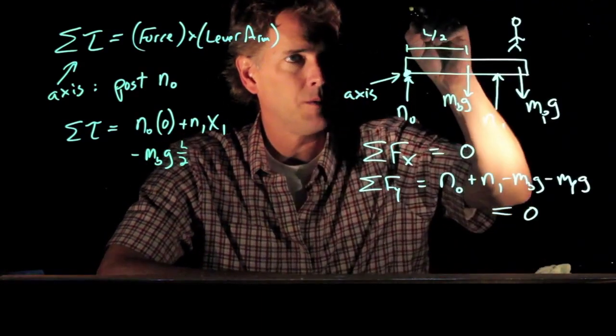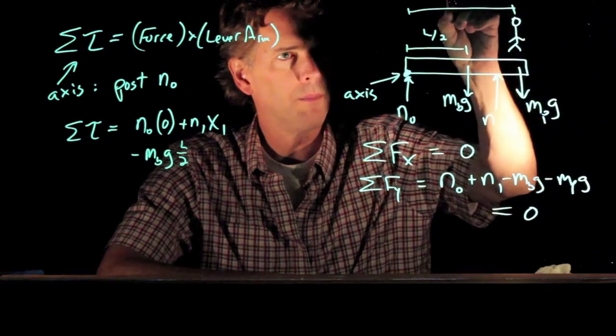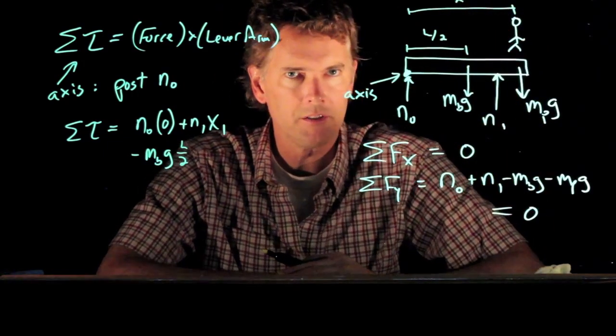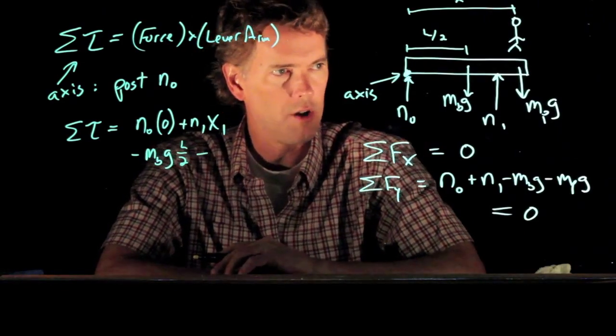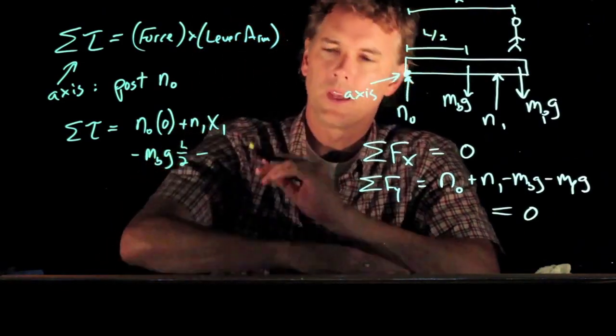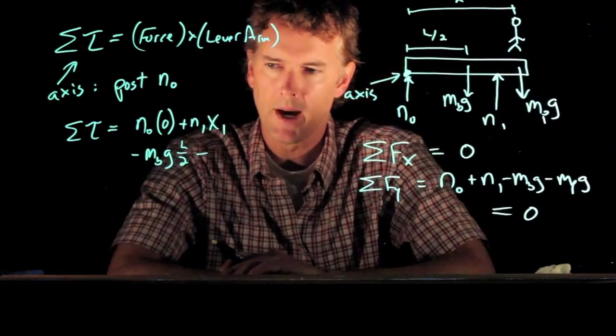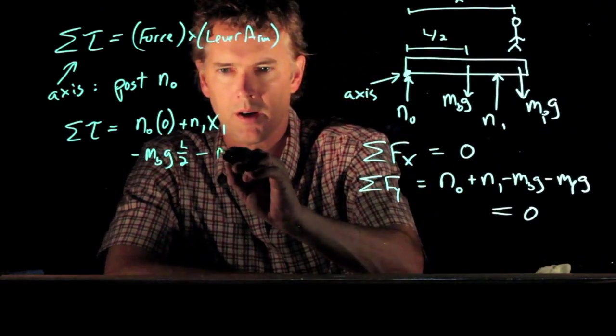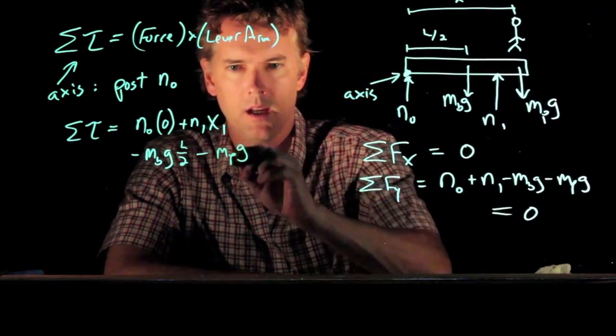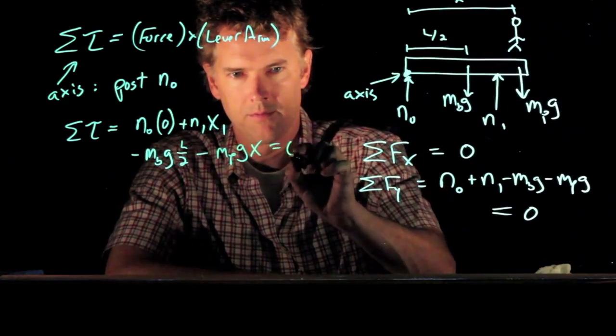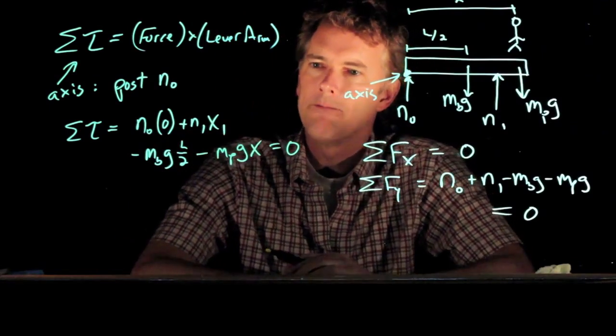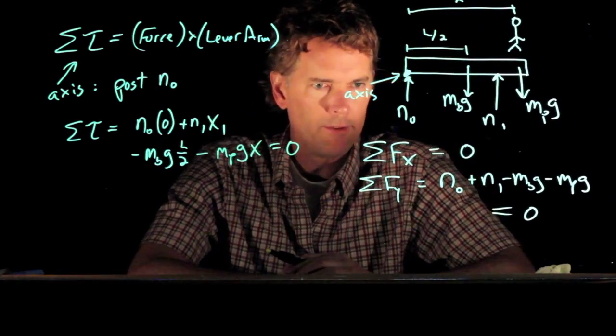And then finally we have to analyze the person. And we said that person is out a distance x from the axis, also trying to rotate the beam clockwise. So we give it a minus sign. And so this becomes m sub p times g times x. Okay. And now we have a few equations.